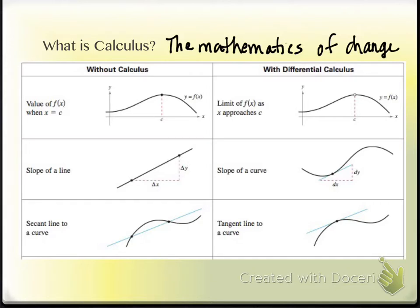Without calculus, you're able to find a secant line to a curve. From geometry, a secant line means you take two points on an object and draw a line through them. With calculus, you're able to find tangent lines — just like in geometry, tangent lines just touch the curve at one point. You're actually able to find the slope of that tangent line even though there's only one point being used.